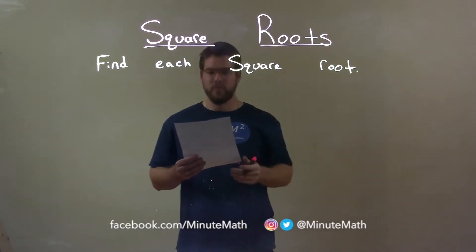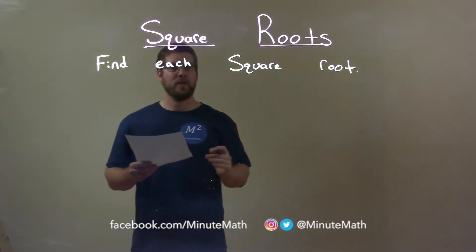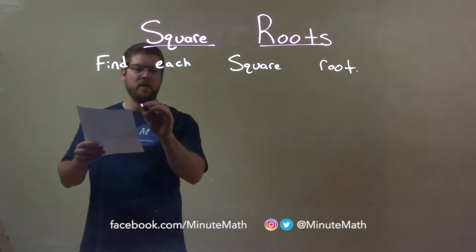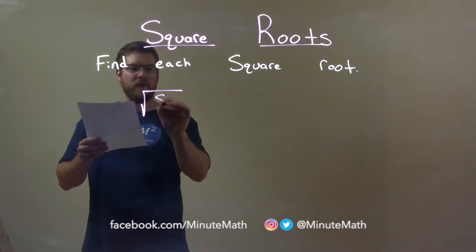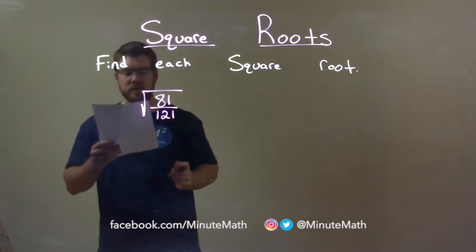We find each square root. So if I was given this problem: the square root of 81 over 121.